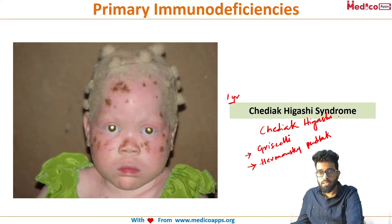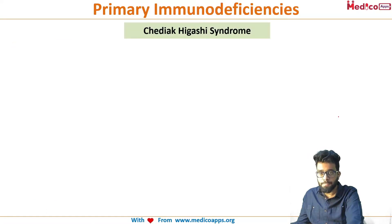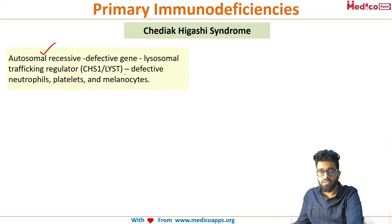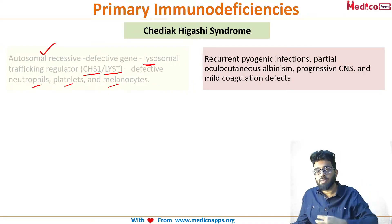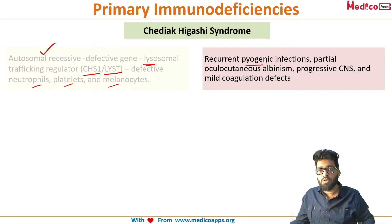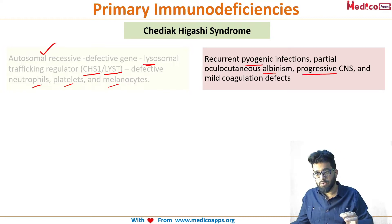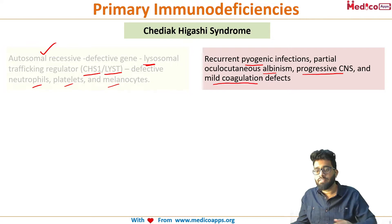Chediak-Higashi syndrome is an autosomal recessive disease. The defective gene is the CHS1/LYST gene, which plays a major role in lysosomal trafficking in neutrophils, platelets, and melanocytes — so all three are affected. Because neutrophils are affected, there is defective lysosomal trafficking and defective phagolysosome fusion, resulting in recurrent pyogenic infections. Because melanocytes are affected, you get albinism. Because neural cells are affected, you see progressive CNS manifestations. Because platelets are affected, there are coagulation defects.